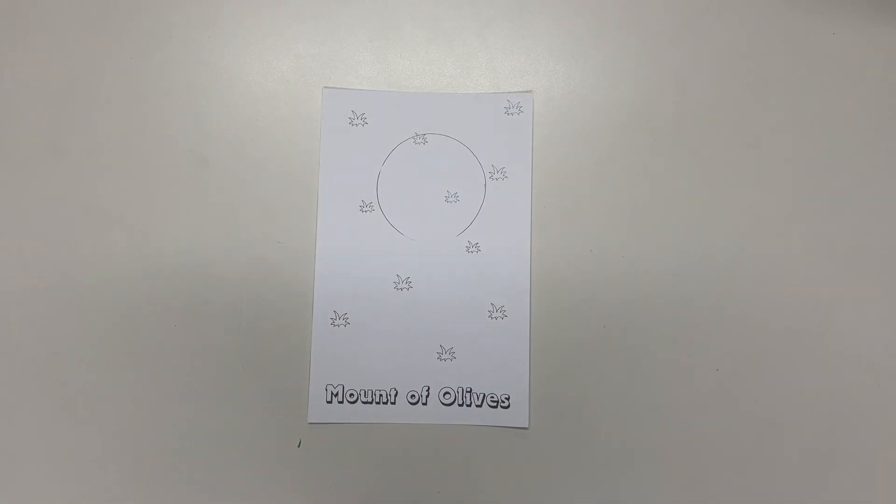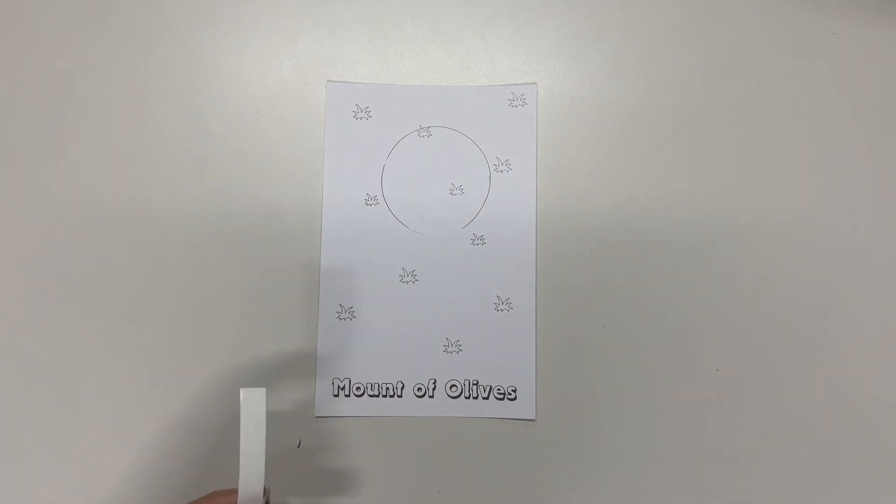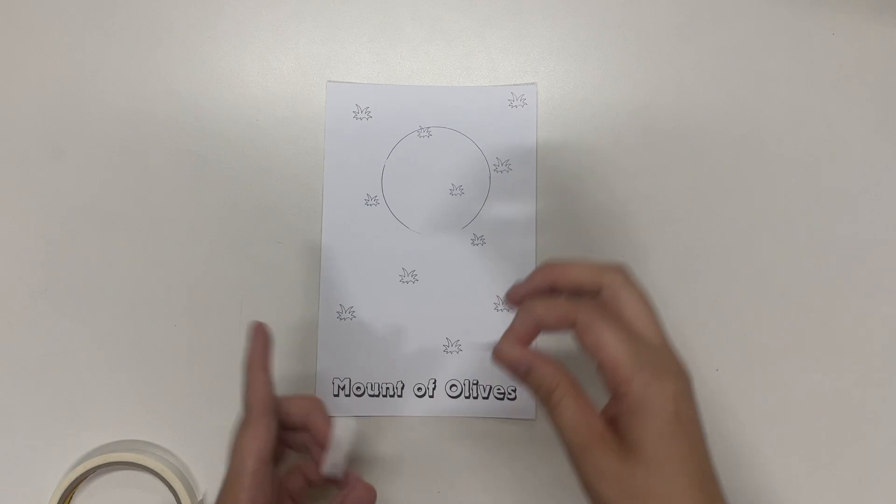Next, let's get our base card. So here, I just drew a circle based on the circumference of the paper cup. But for our craft team, we already printed the circle on the base cards.